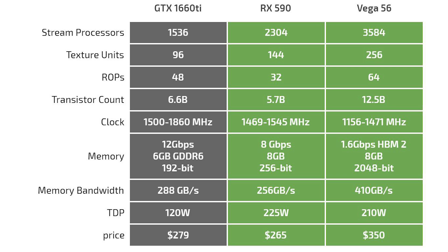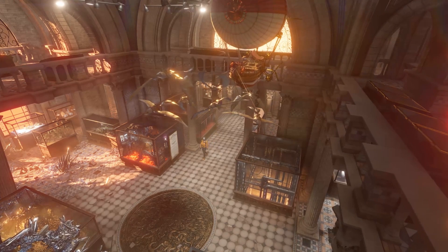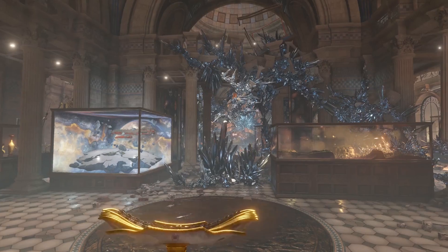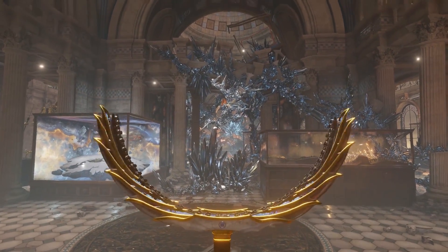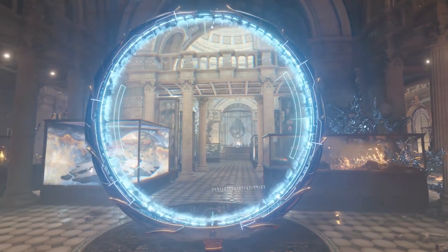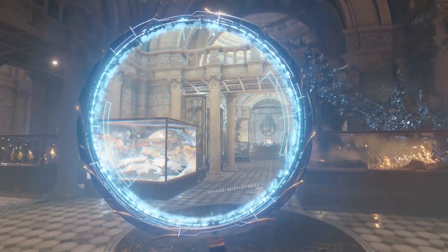We're going to go into the actual benchmark results, first starting with the synthetic Time Spy benchmark, then moving into real-world gaming benchmarks at 1080p resolution and Quad HD resolution. We're specifically looking at average frames per second to keep things as simple as possible and give you a clear idea of how the 1660 Ti compares against the other two cards.